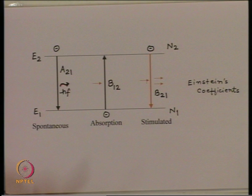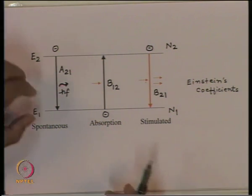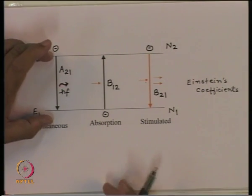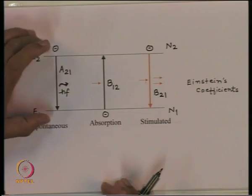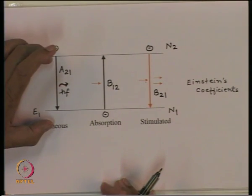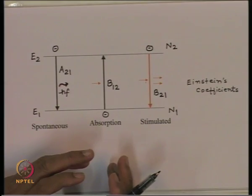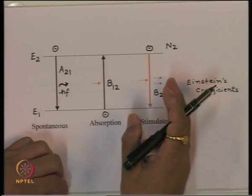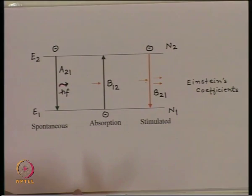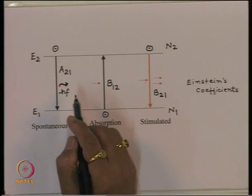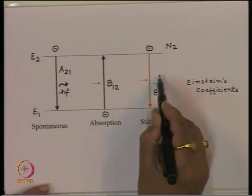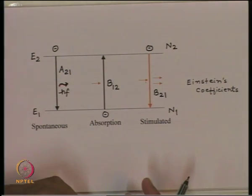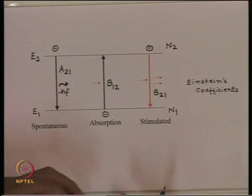Temporal coherence will be there because we are talking about very sharp discrete energy levels. Later on we will see that in semiconducting materials these bands are not sharp, and then the photon will also have a spectral width, and we will not have even temporal coherence in the stimulated emission. Since the seed comes from inside, though amplification is going to take place and the number of photons will be large, they will not have complete coherence.